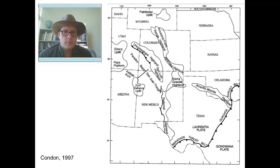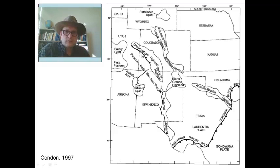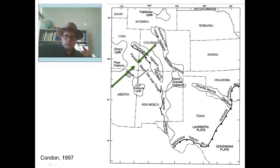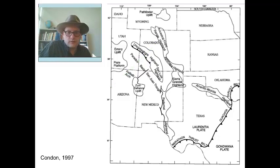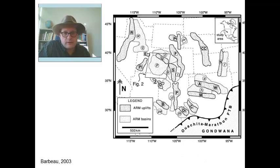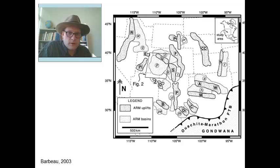We can map out the uplifted areas: the Uncompahgre Highlands and the ancestral Front Range are the two major uplifted areas. The Uncompahgre Highlands formed a low-angle thrust-type fault situation that runs across here, setting up the Paradox Basin to form, driven by a compressional force moving from southwest to northeast across southeastern Utah. There are actually many uplifts and basins developing during the Permian and Pennsylvanian time, including many basins in west Texas that are also very important for oil and natural gas and are contemporaneous with the Paradox Basin.